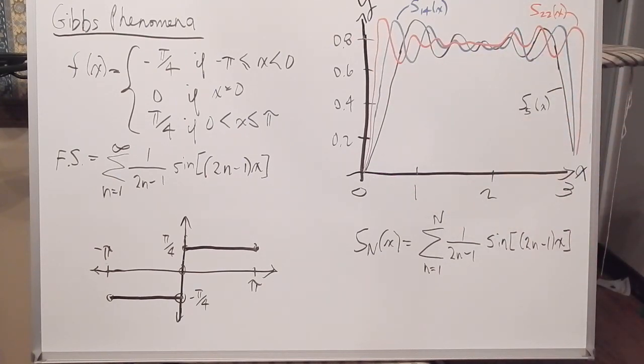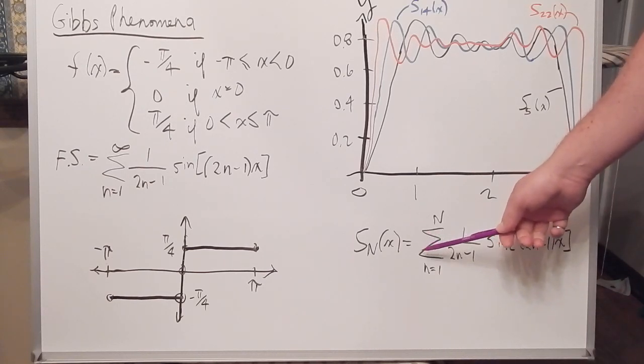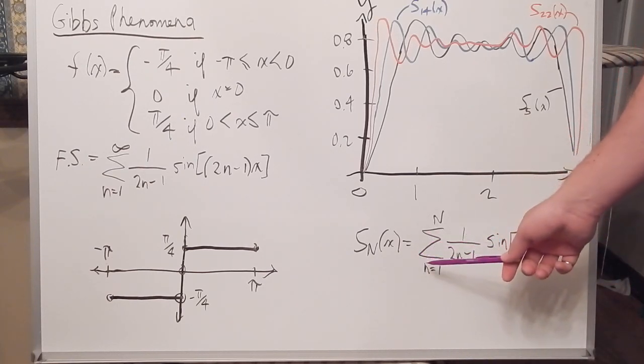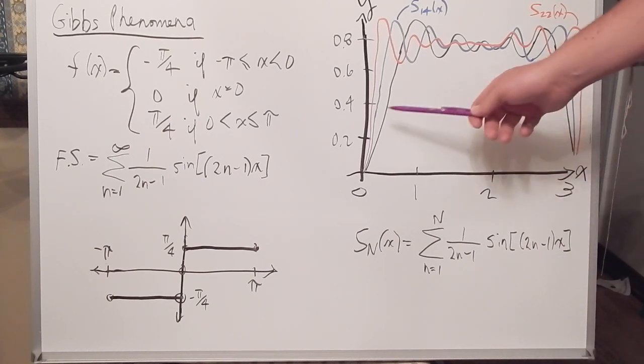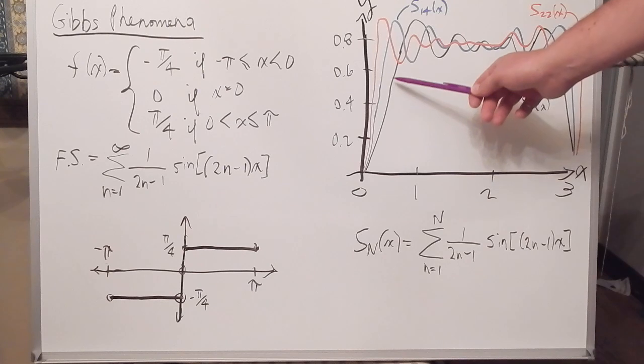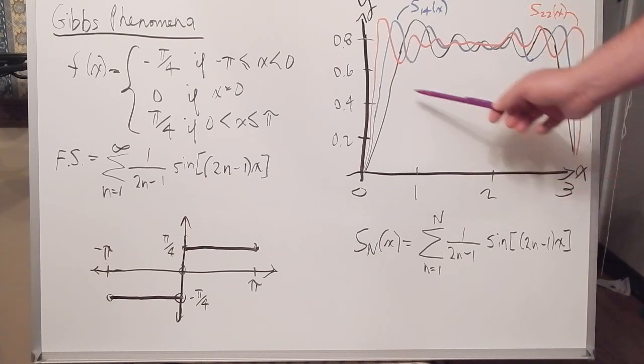And I've written out our nth partial sum notation here. And here I've plotted this black line, I've plotted the 5th partial sum.